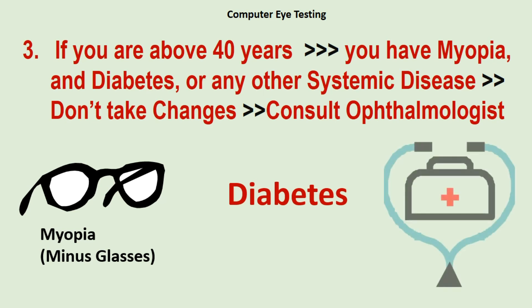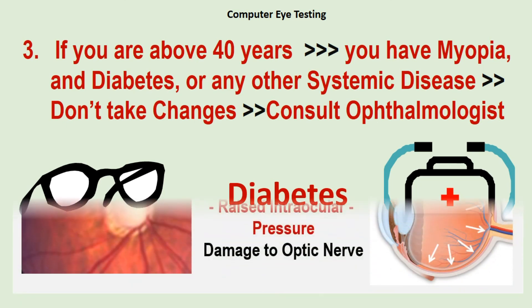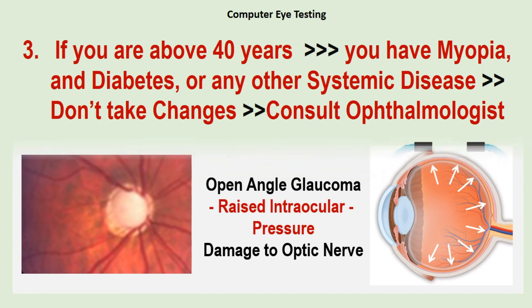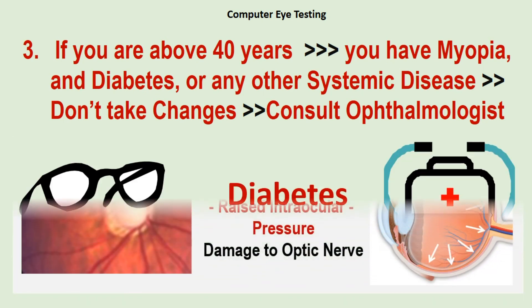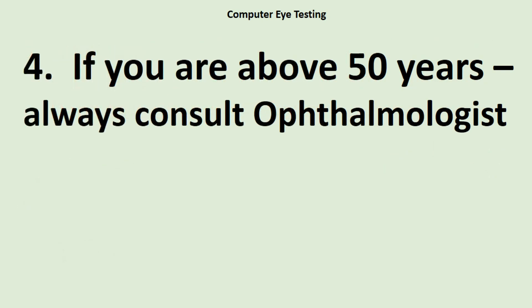But if you are above 40 years and have myopia — meaning minus power — and diabetes or any other systemic illness, and have some visual problem, then you should not take chances. Resist all temptations and avoid wrong advice from friends, and go to an ophthalmologist. Open angle glaucoma is a dreadful eye disease that usually occurs after 40 years. The eye apparently looks normal from outside, but inside there can be damage to the optic nerve, which is irreversible after treatment, and there is every possibility of losing vision if not detected early. If you are above 50 years, always consult an ophthalmologist.